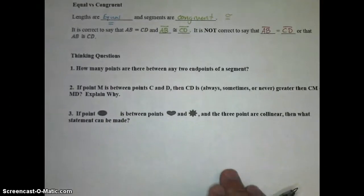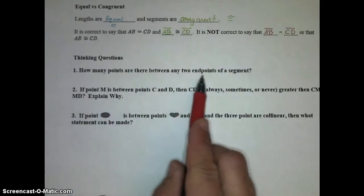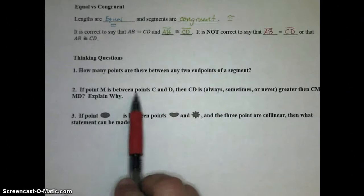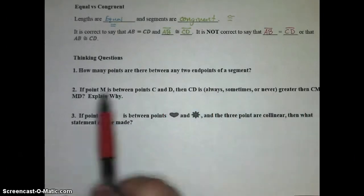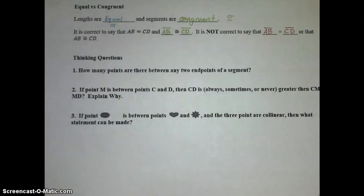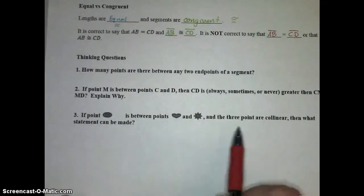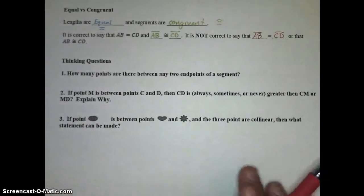To finish out this lesson, I want you to come up with some answers to these thinking questions. One, how many points are there between any two endpoints of a segment? Two, if point M is between points C and D, then CD is always, sometimes, or never greater than CM or MD. And then give an explanation. And then number three, if point smiley face is between points heart and star, and the three points are collinear, then what statement can be made? And this one can be a little bit tricky, but I want you to come up with your answers to the thinking questions and have them ready to discuss with another classmate when we show up to class the next day.